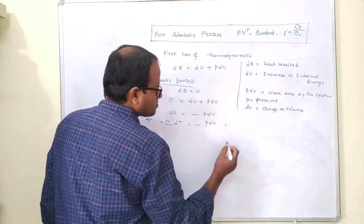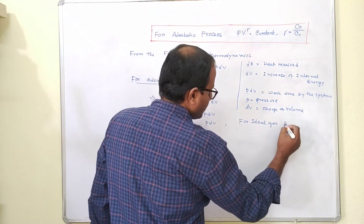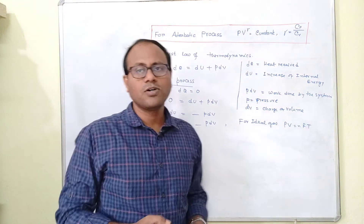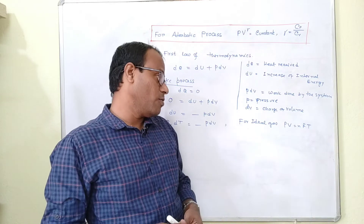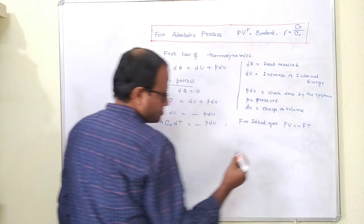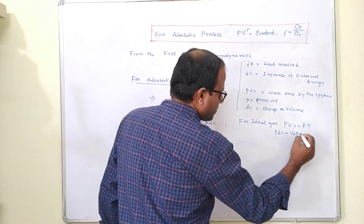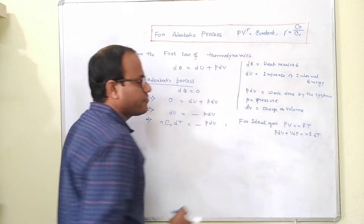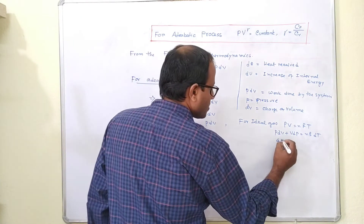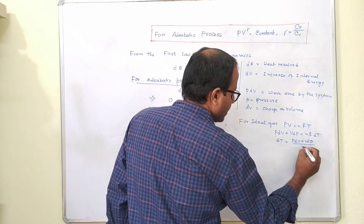For an ideal gas, PV equals nRT. Differentiating, we get P dV plus V dP equals nR dT. So dT equals P dV plus V dP divided by nR.